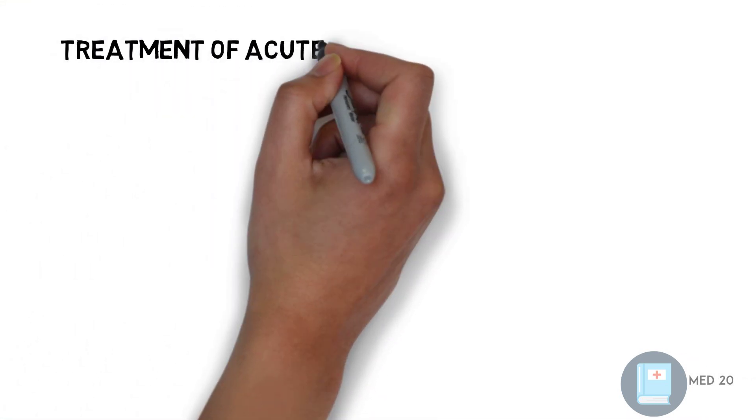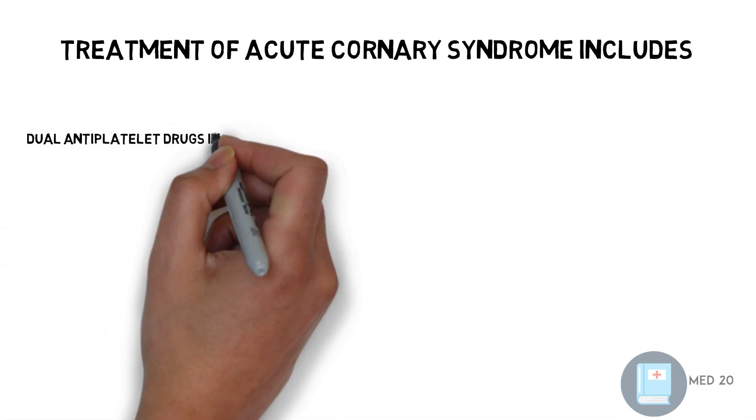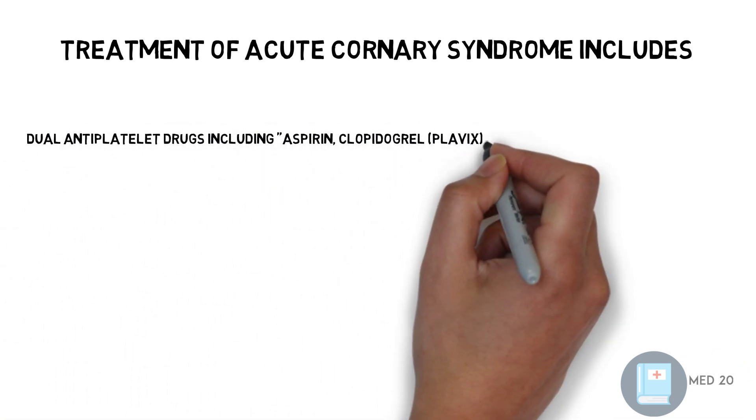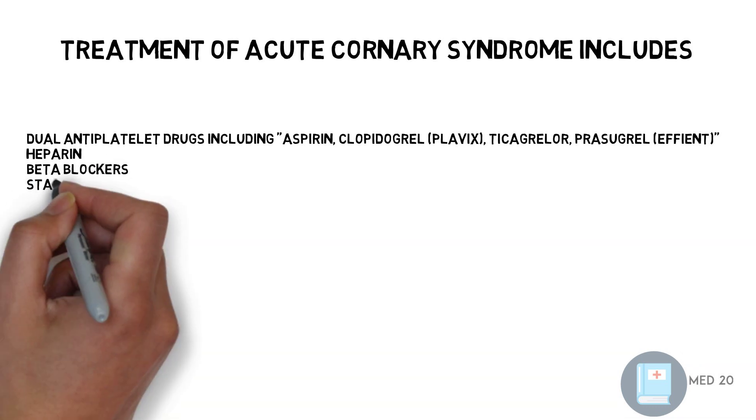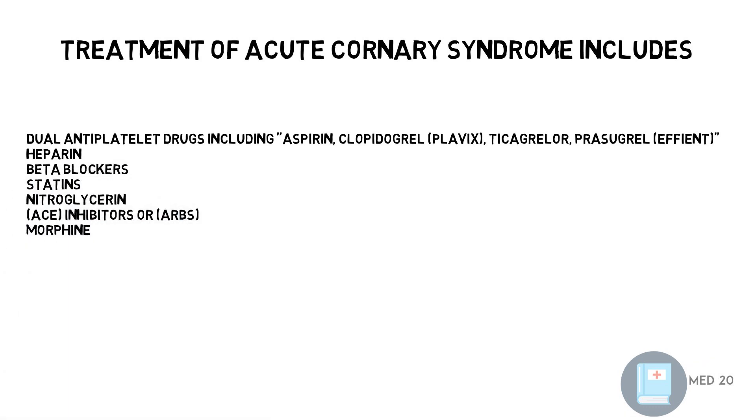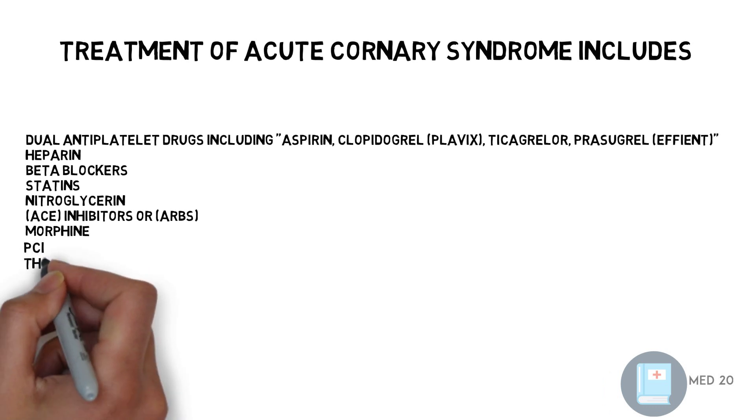Treatment of acute coronary syndrome varies depending on the type, duration, severity of presentation, and the facility of the center. The main goal is reperfusion, achieved through either medical therapy or interventional therapy. Medical therapy includes dual antiplatelets, heparin, beta blockers, statins, nitroglycerin, ACE inhibitors and ARBs, and morphine. Interventional therapy may include PCI and thrombolytic therapy.